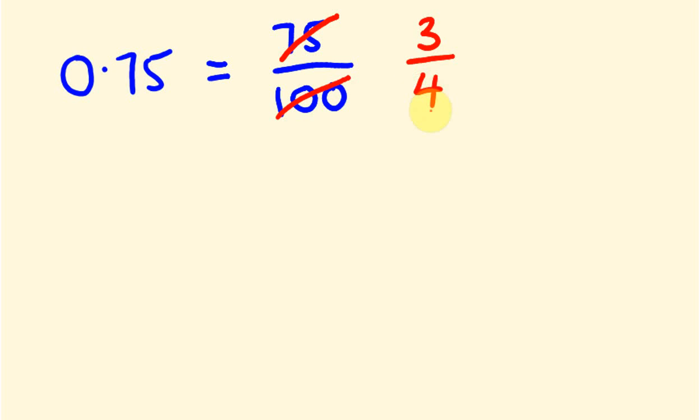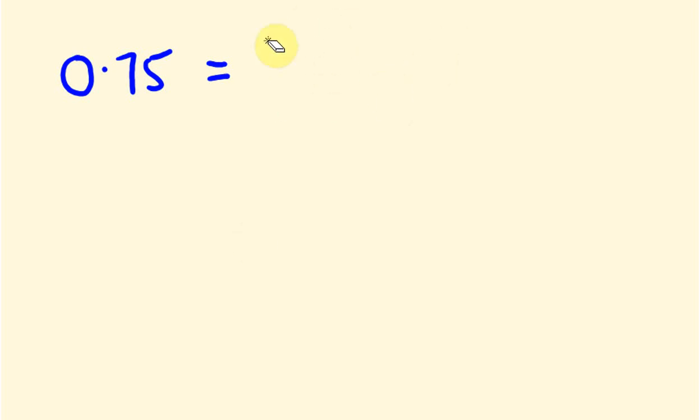Those are fairly easy. I'll give you one more example — a harder one that you might not know off the top of your head. Say we had to change 0.1875 into a fraction.